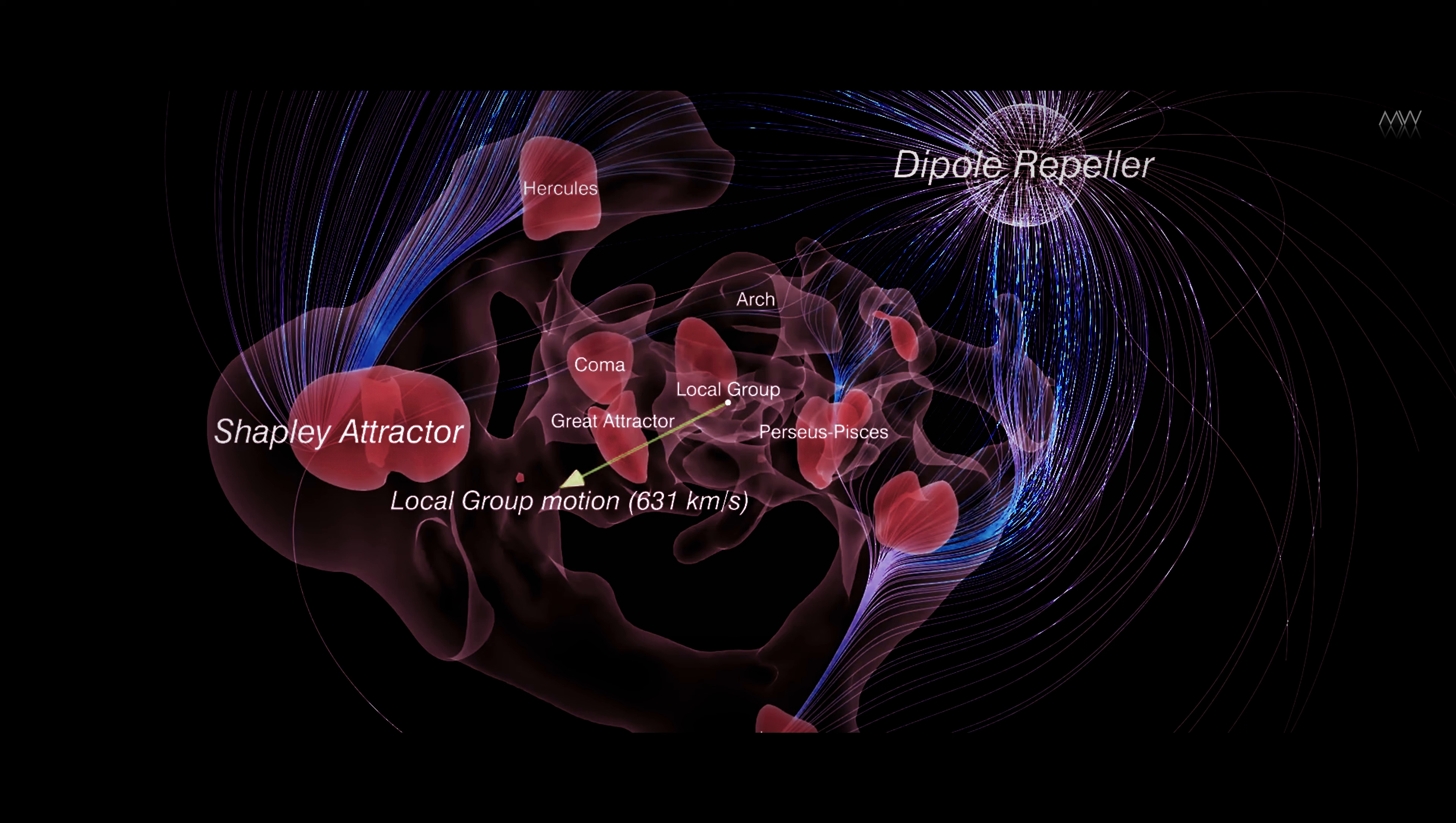Conversely, in the opposite direction from the Shapley Supercluster, there exists an under-dense region where it appears that everything is moving away, termed the dipole repeller.